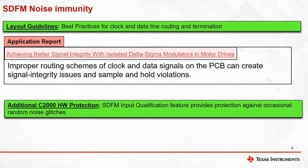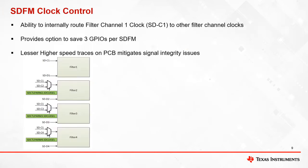Devices supporting type 2 SDFM also provide additional hardware protection against occasional random noise glitches using the SDFM input qualification feature. The SDFM clock control feature allows filter channel 1's clock signal to be internally routed to the other 3 filter channels within the SDFM module. This saves up to 3 GPIOs per SDFM module, and filter channels 2, 3, and 4 SDFM clock pins can be used for other purposes. In addition to saving GPIOs, it also mitigates signal integrity issues as there are fewer high-speed traces on the PCB.